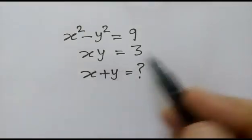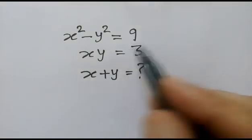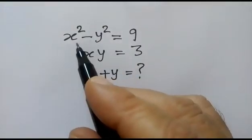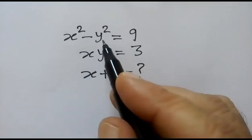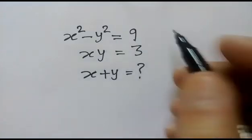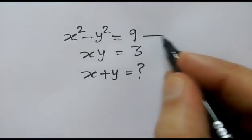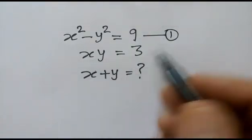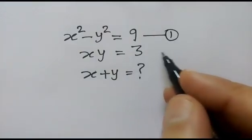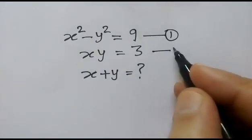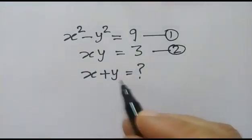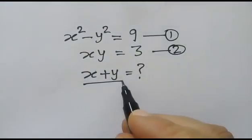Hi friends, today we have a nice algebraic problem. Equation one: x squared minus y squared is equal to 9. Equation two: x times y is equal to 3. We have to find out the value of x plus y.